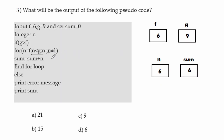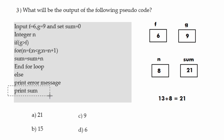Because of n equals n plus 1, n is incremented to 7. We check n less than g again: 7 less than 9 is true, so sum equals sum plus n gives 6 plus 7 equals 13, and n becomes 8. Again 8 less than 9 is true, so 13 plus 8 equals 21, assigned to sum. At the end we print the value of sum, which is 21. Our answer is 21.